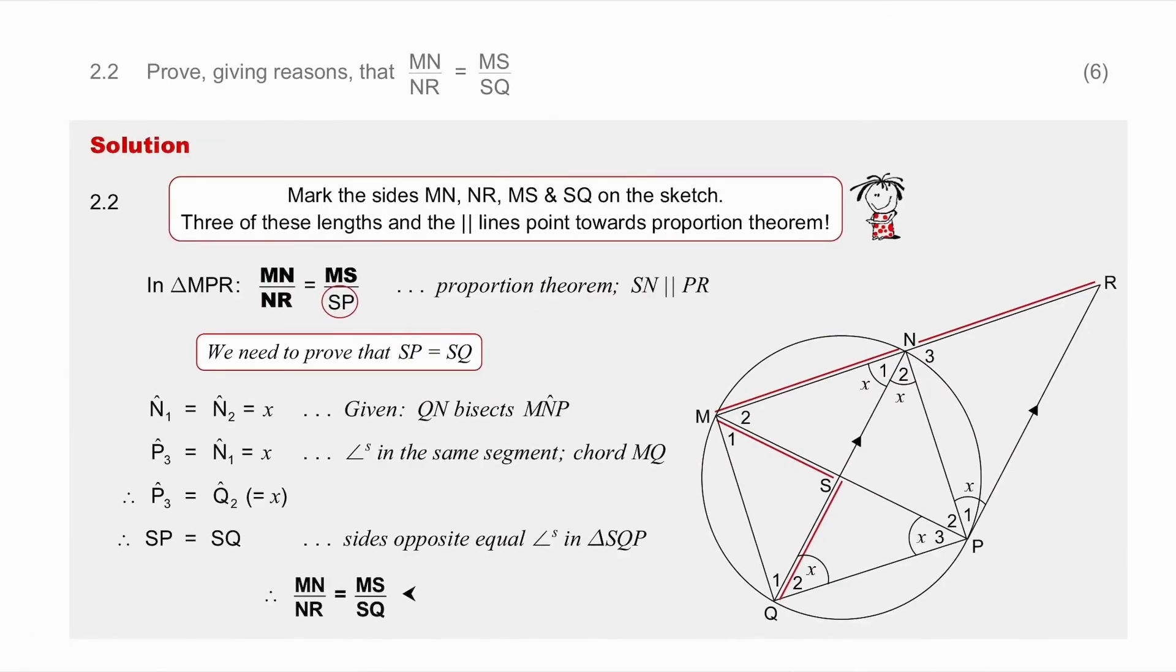In the next question they ask you to prove that MN over NR is equal to MS over SQ. Mark the sides on the sketch: MN, NR, MS, SQ. Now that's not in a triangle. I do have a triangle with a parallel line but that would involve SP and not SQ.